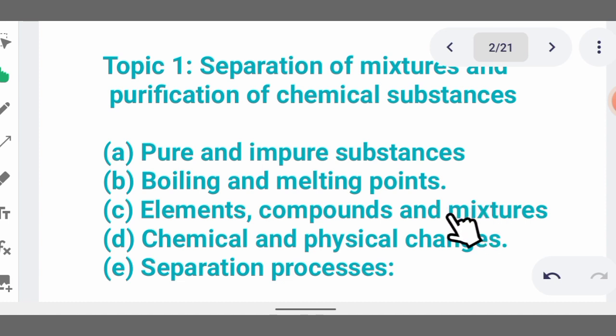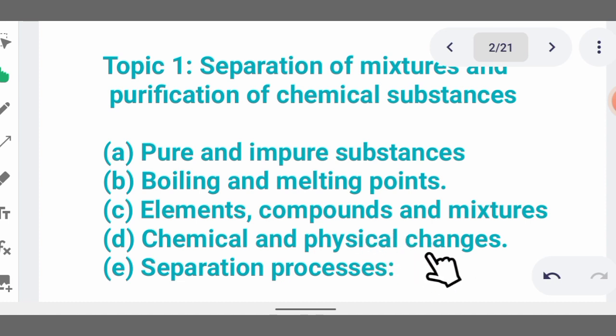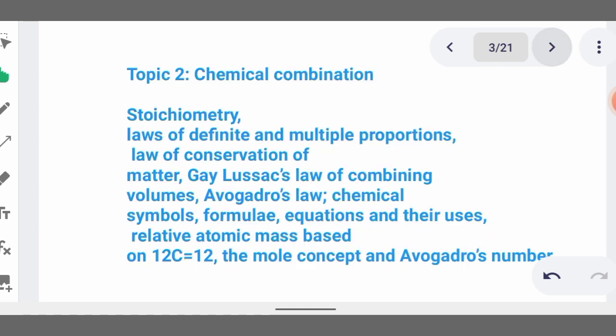Then we cover chemical and physical change. Chemical changes are those in which new substances are formed and cannot be easily reversed. Physical changes are those where no new substance is formed and it can be reversed to its initial state. From here, you just need to understand the separation processes and techniques.